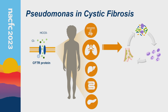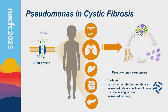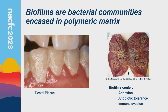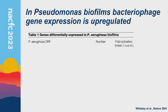CF patients are born with structurally normal lungs but quickly develop thickened dehydrated mucus, get exposed to bacteria from the environment, have an influx of immune cells, and develop this vicious cycle of infection and inflammation. Pseudomonas is the most common organism cultured from CF sputum. It forms biofilms, is very resistant, and is associated with poor outcomes in CF. Biofilms are communities of bacteria encased in polymers — like dental plaque — and confer adhesion, antibiotic tolerance, and immune evasion.